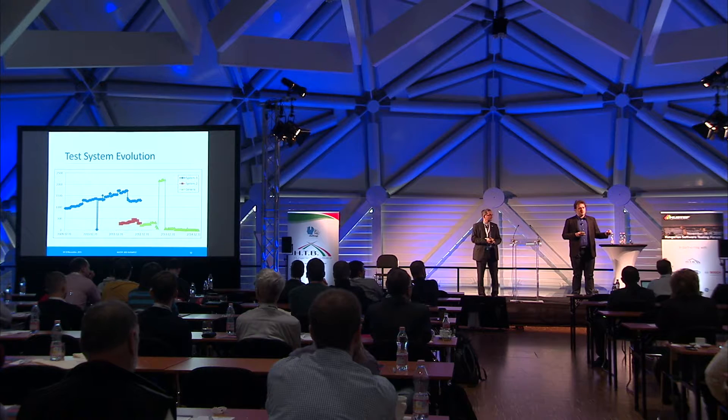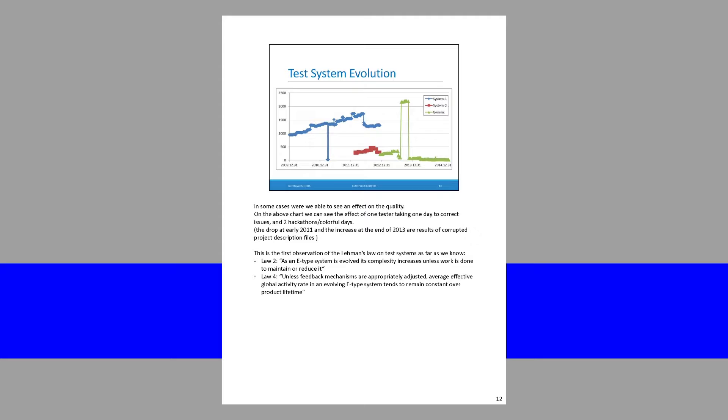However, there were some changes in a few cases. On this graph you can see there were three times when quality improved. In the first case, a tester simply found it too boring to maintain such a bad system and spent a few hours of their own time to clean it up. In the other two cases, we organized hackathons where people could volunteer to do whatever they wanted for a 16-hour timeframe. Then we thought this would grant us the Nobel Prize, because test systems follow a completely predictable pattern of growth.